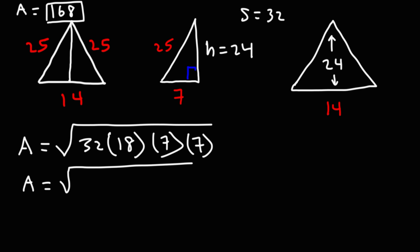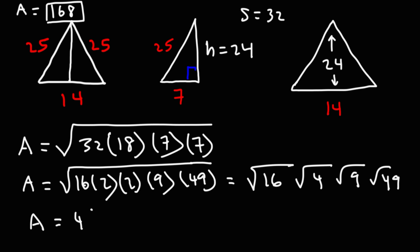32. We can write that as 16 times 2. 18. That's 2 times 9. And 7 times 7. I'm going to leave it as 49. I'm trying to collect all the perfect squares here. So, 16 is the perfect square. 2 times 2 is 4. We have 9 and 49. The square root of 16 is 4. The square root of 4 is 2. The square root of 9 is 3. And the square root of 49 is 7.